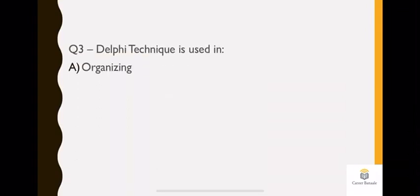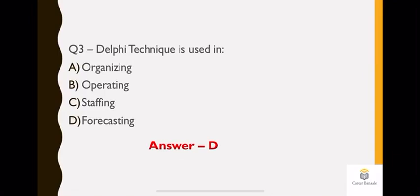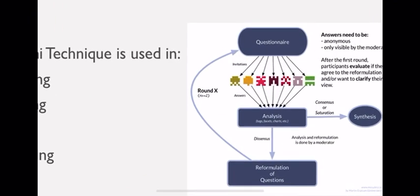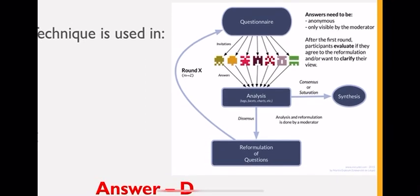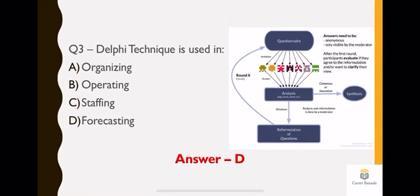Let's go to third question which is on Delphi technique. Delphi technique is used in: A organizing, B operating, C staffing, and D is forecasting. Delphi technique, I have to tell you, is used anonymously in many organizations. If you have to know what is going to happen in the field, this is one of the techniques which is used by organizations for what? For forecasting. The questions are asked anonymously until there is a conclusion. This is kind of research methodology. If you have studied brainstorming, this is very much similar to brainstorming but one step ahead.